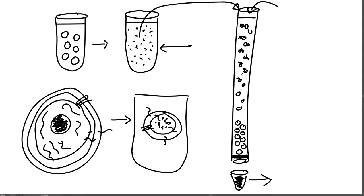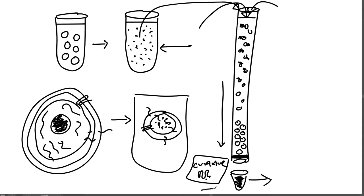All that remains are beads with alpha-bungarotoxin attached to the acetylcholine receptors — an affinity chromatography technique. Then Sheng Zhu adds curare, which also binds to the receptor and outcompetes the alpha-bungarotoxin for the receptor site. The receptors come off the alpha-bungarotoxin beads, bound to curare, and fall through the column into a new test tube.